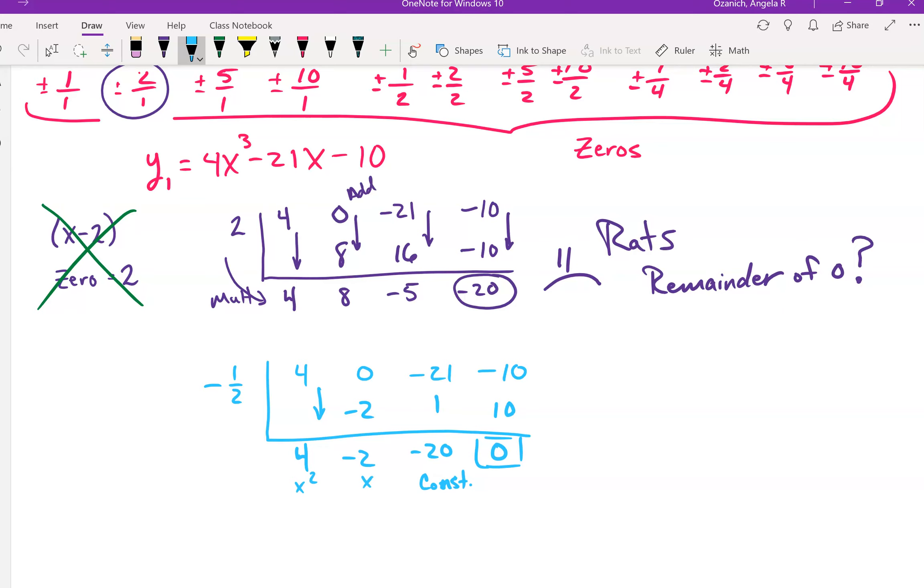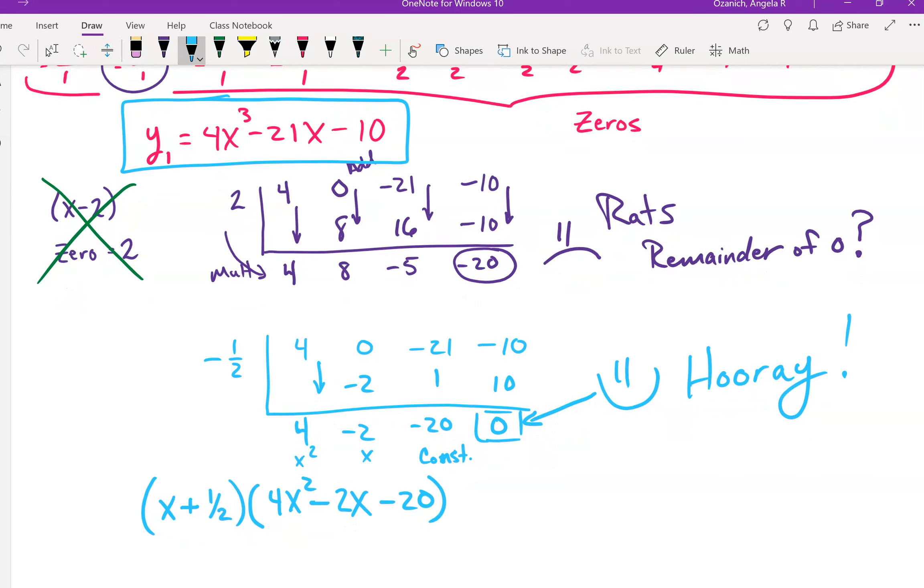And remember, this is your constant. And this is your x term. And this is your x squared term. Well, guess what? Now I know that this polynomial function is made up of x minus a negative 1 half times this result that I got right here, 4x squared minus 2x minus 20. It divided in evenly, essentially. It has a remainder of zero. So you're like, hooray, instead of rats, right? It has a remainder of zero.